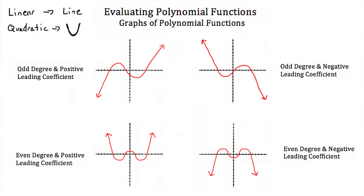If we have an odd degree, like a cubic or fifth-power polynomial, and a positive leading coefficient, then our graph would look something like this: we start low, go through a small S or squiggly shape, and then end high. Now if we have an odd degree but a negative leading coefficient, we just mirror this graph — we start high and end low, with our little S shape in the middle.